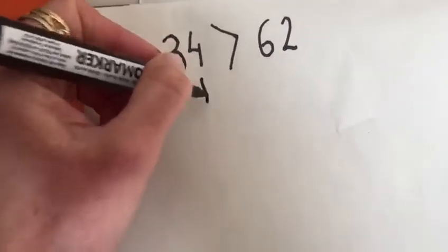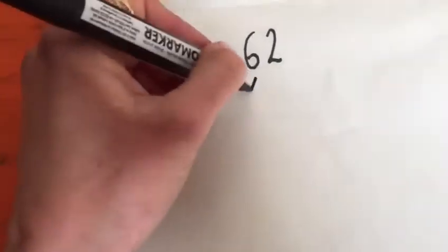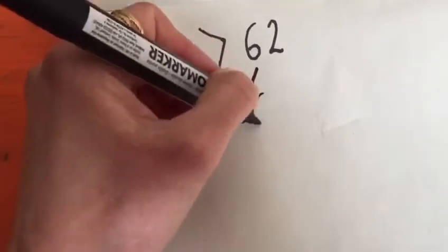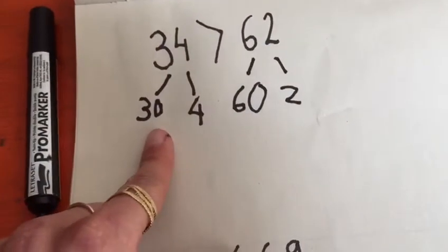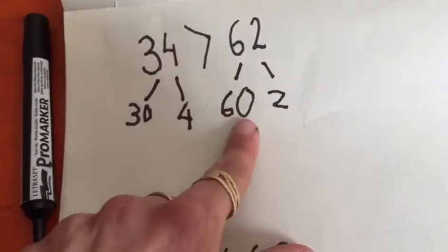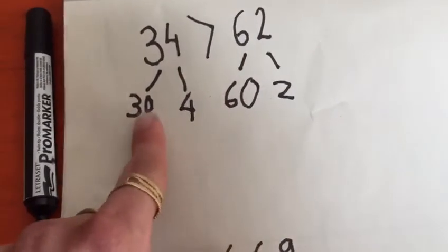So I've got 30 there and four ones there, six tens there and two ones there. So I can see that there are three lots of ten there and six lots of ten there and I know that six lots of ten is more than three lots of ten.